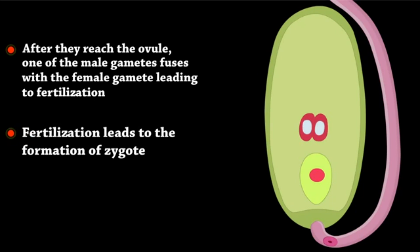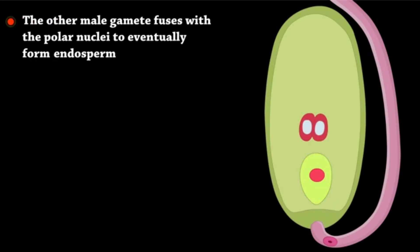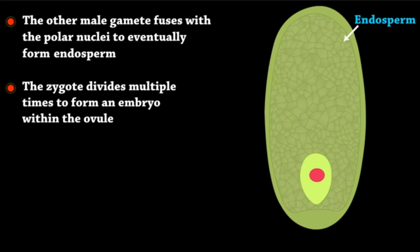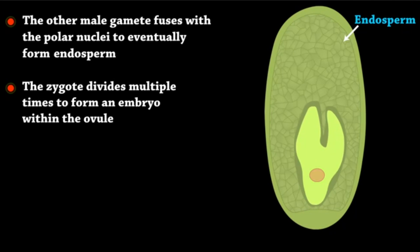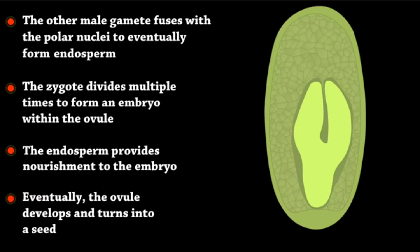Fertilization leads to the formation of a zygote. The other male gamete fuses with the polar nuclei to eventually form endosperm. The zygote divides multiple times to form an embryo within the ovule. The endosperm provides nourishment to the embryo. Eventually, the ovule develops and turns into a seed.